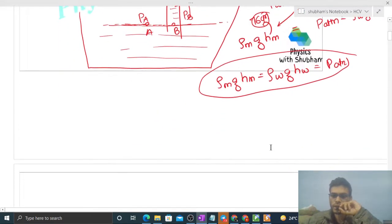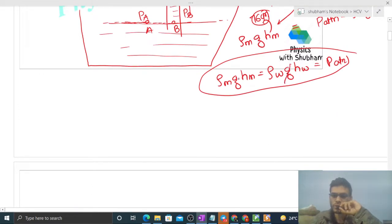Now here we can calculate the height for water. And what is the density of mercury? That is 13.6 into 10 raised to the power 3 into height of mercury is 76 centimeter.